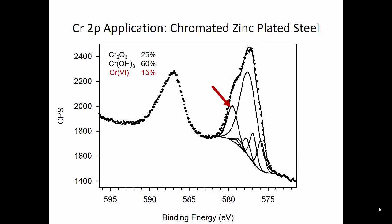Looking at a finished example, to get the amounts of the different species we add up the areas of the five peaks to get the chromium oxide contribution, take the area of the single peak for chromium hydroxide, and in this case we also have some chromium 6+ showing up. One caveat with chromium 6+ is that because it overlaps significantly with the chromium 3+ species, we generally want to see at least 5 to maybe even 10% in peak area before we can really confirm its presence — otherwise a fit at 2 or 3% depending on noise is not strong proof that chromium 6+ is there rather than being part of the multiple split structure of the chromium 3+ species.